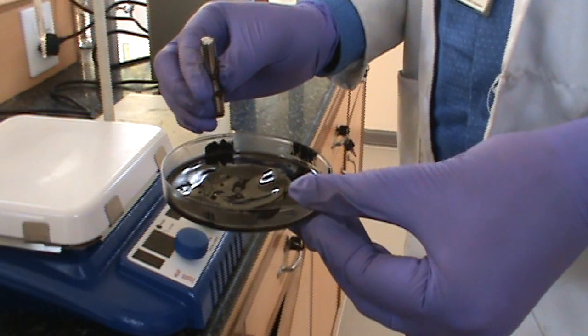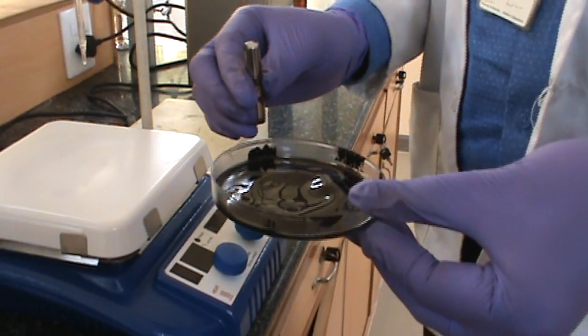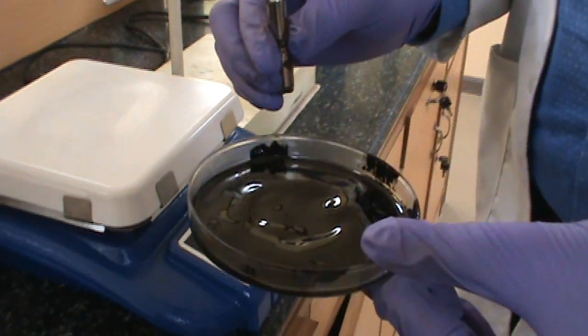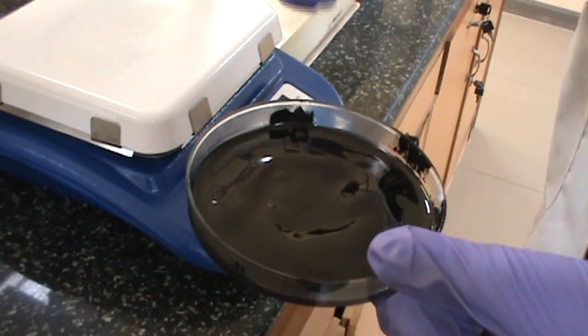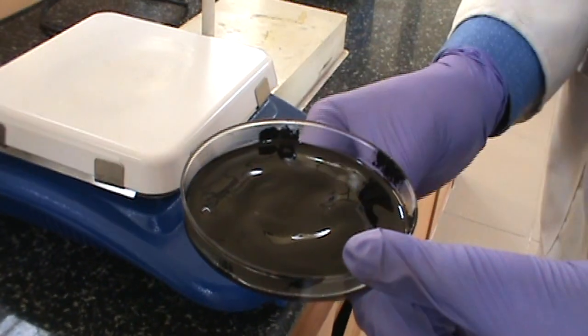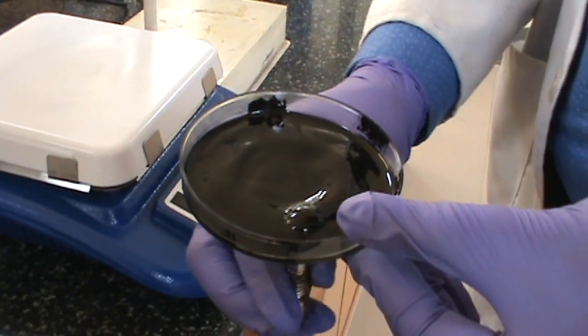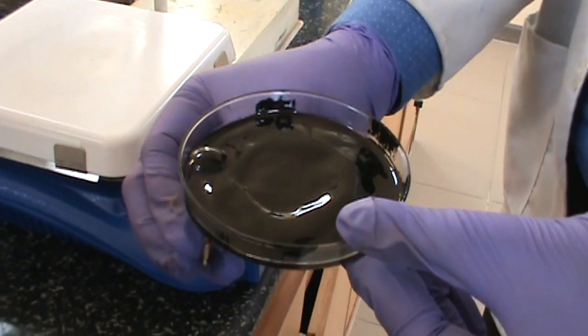We filtered out the iron oxide nanoparticles, dried the sample, and then mixed it with oil. Now you can see we have a magnet here and these particles are magnetic and they can be used for various applications where ferrofluids are used.